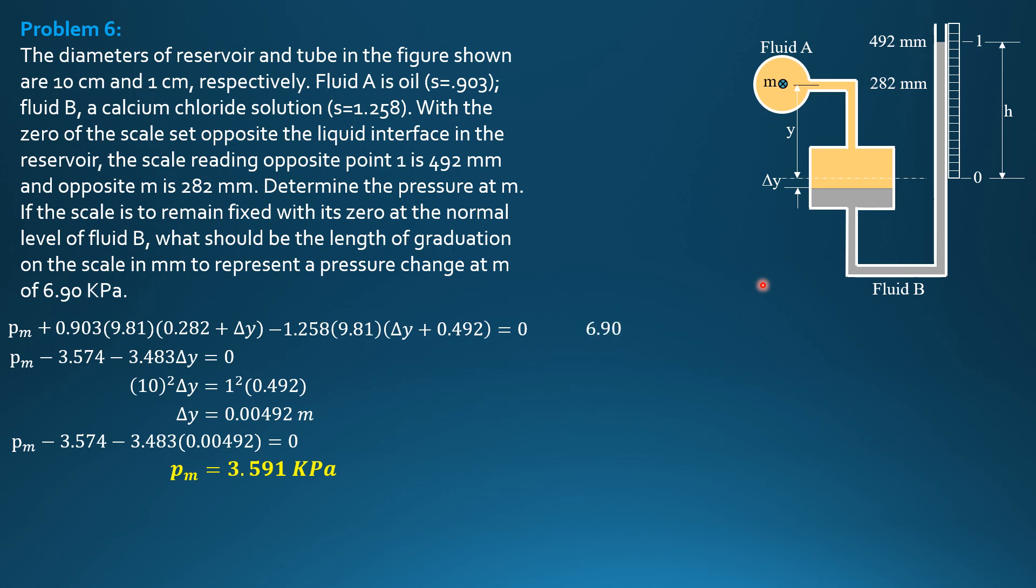H is unknown this time, but we still equate the pressure at the top as 0. So that is 6.9 plus specific weight of fluid A, which is 0.903 times 9.81 times delta Y. Then we jump across here minus 1.258 times 9.81 times quantity delta Y plus H equals 0. Then simplifying, 6.9, combine delta Y, negative 3.483 delta Y, then for H, negative 1.258 times 9.81, negative 12.341H equals 0.